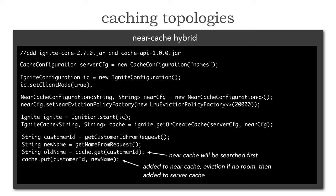And the same thing with cache.put — when I do a cache.put, it's added to my near cache as well as the full backing cache. However, in my cache which is in memory, if there's no room, that's when that eviction policy — that LRU, the least recently used — means the least recently used item is taken out to make room. And then it's also added to the server cache.